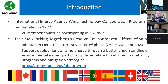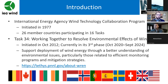Wren is a part of the International Energy Agency's Wind Technology Collaboration Program, and IEA Wind was initiated in 1977. It has 26 member countries participating in 16 tasks, and Wren is designated as Task 34. Wren stands for Working Together to Resolve Environmental Effects of Wind Energy.